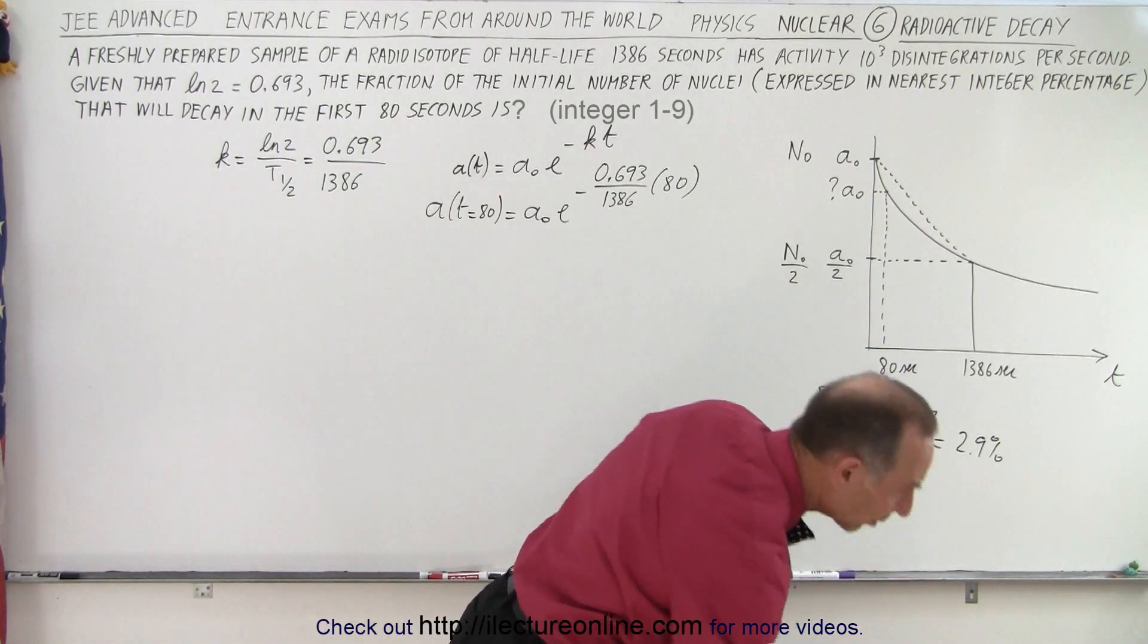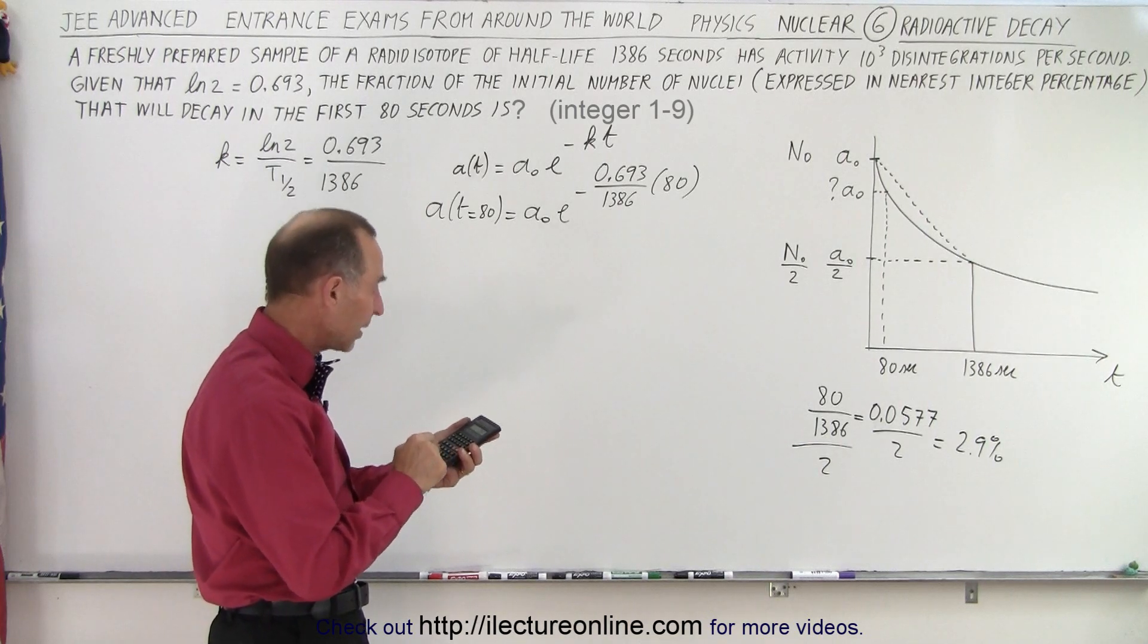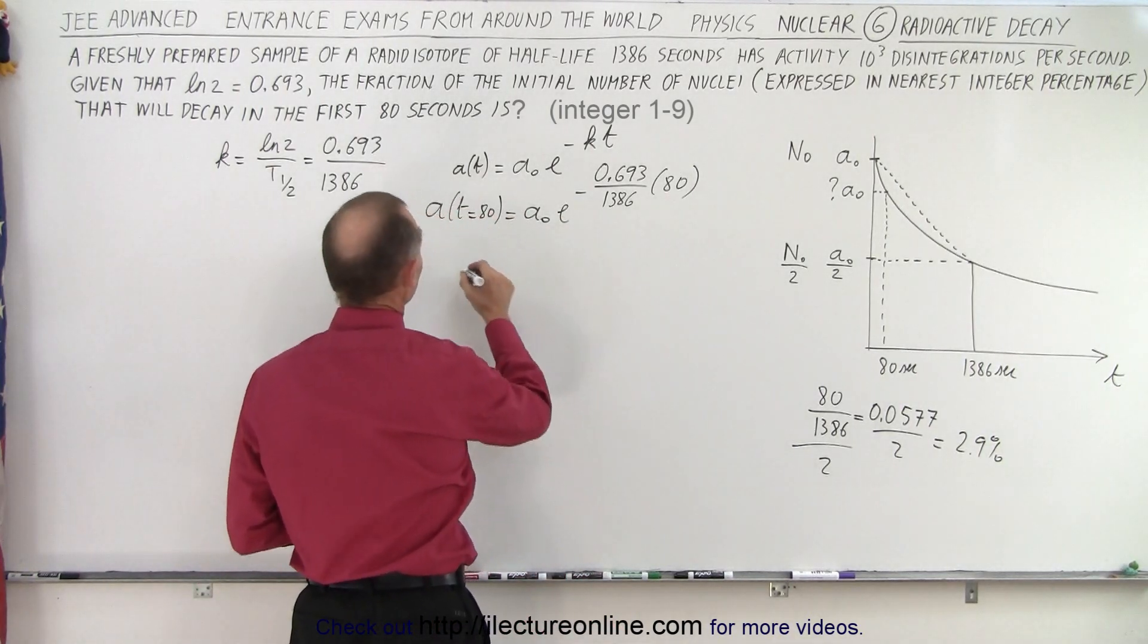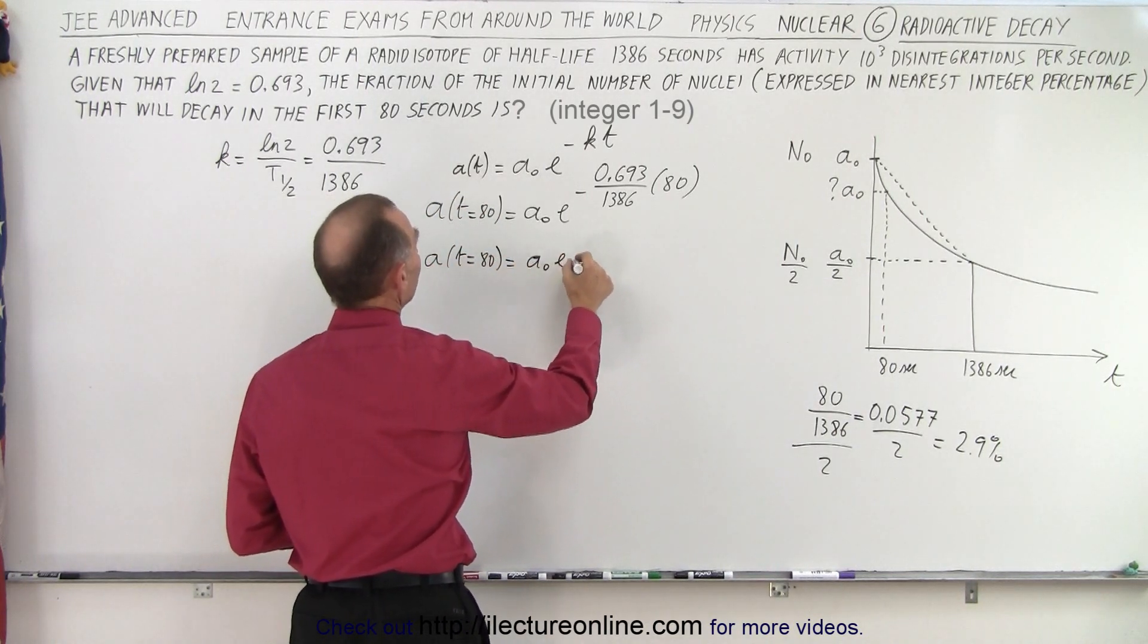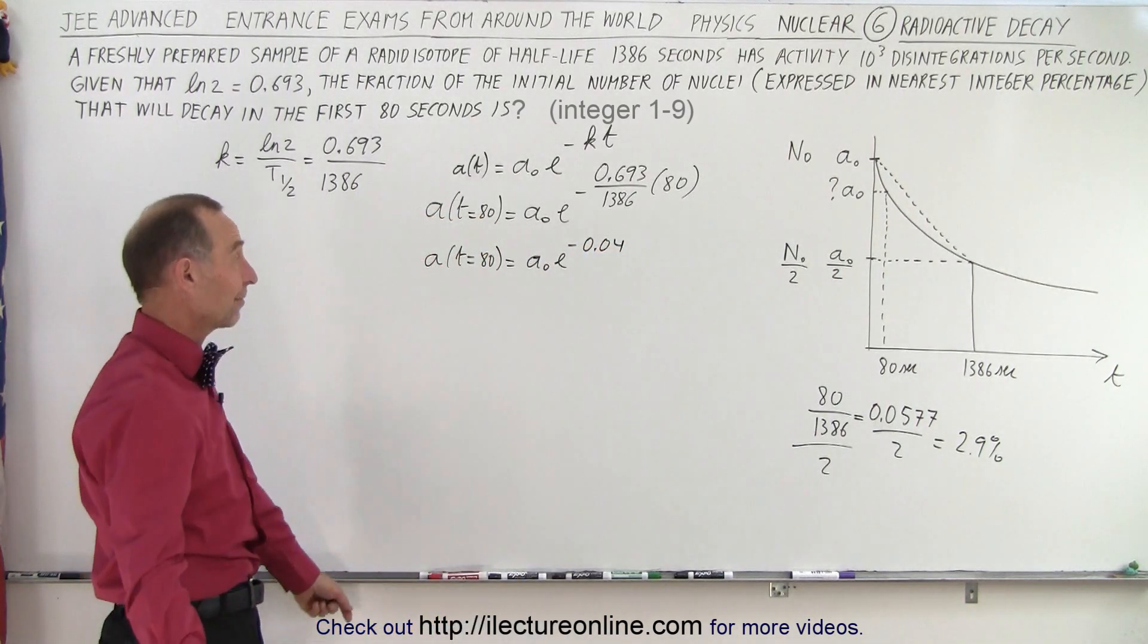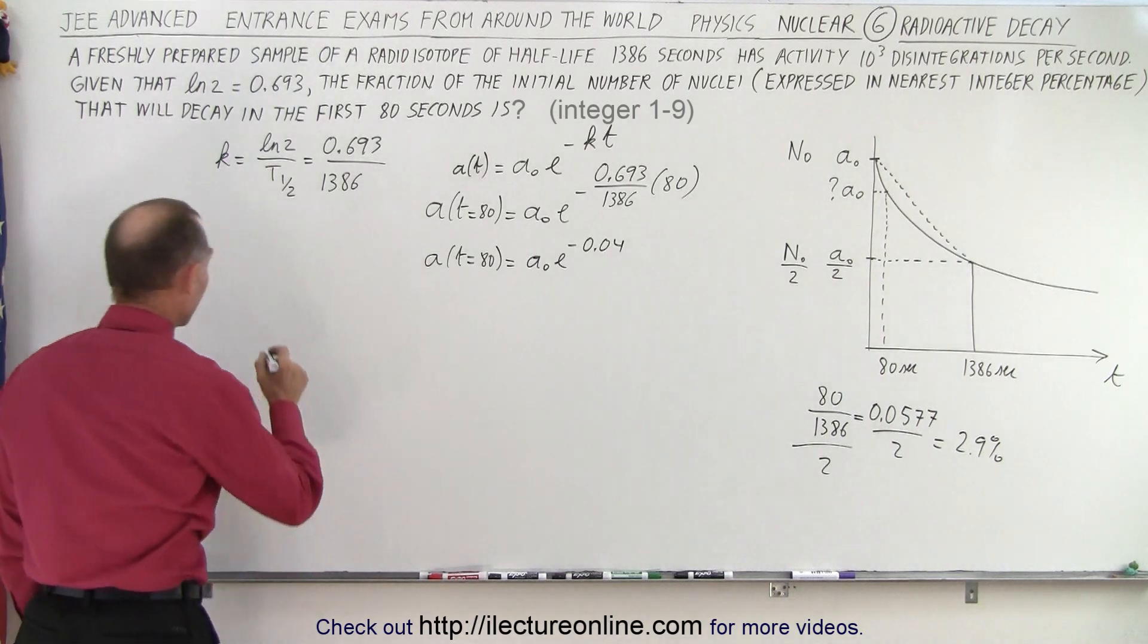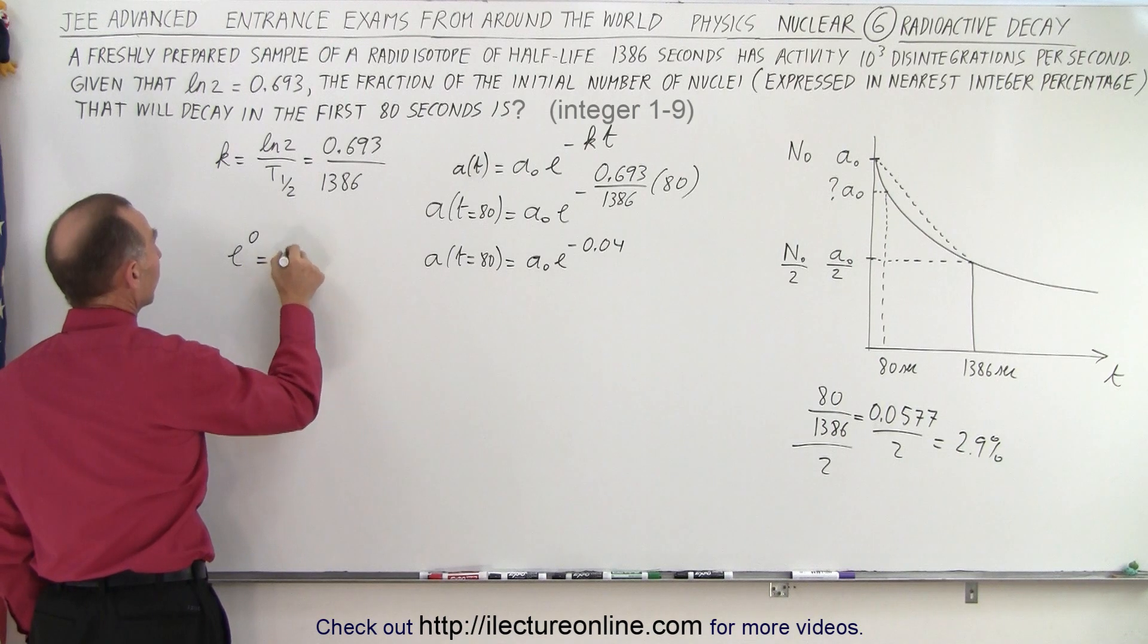But we're going to cheat and do it in a calculator: 0.693 times 80 divided by 1386, and we get 0.04. So that means that A when time is equal to 80 is equal to A sub 0 times e to the minus 0.04. Now again, you don't have a calculator—how do you figure that out, how do you work that out? Well, there's actually a trick you can use if you know the trick.